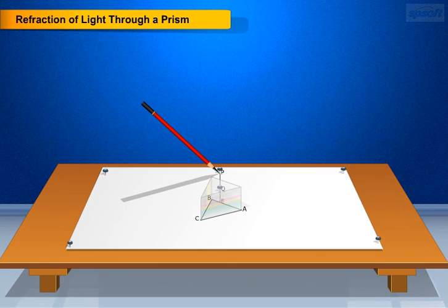Now observe the pins P and Q through the other face AC. Fix two more pins at points R and S, such that the pins at R and S, and the pins at P and Q, lie on the same straight line.